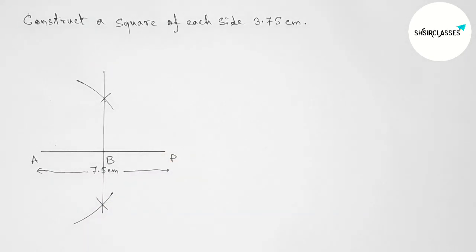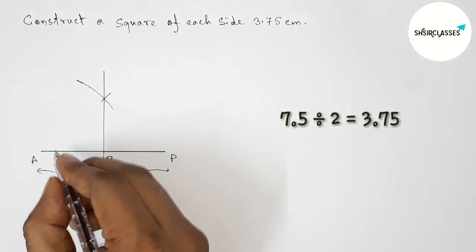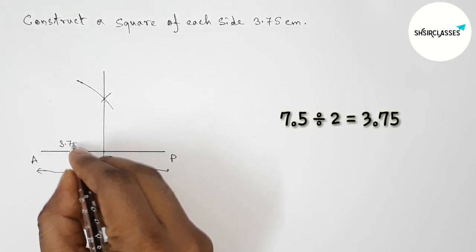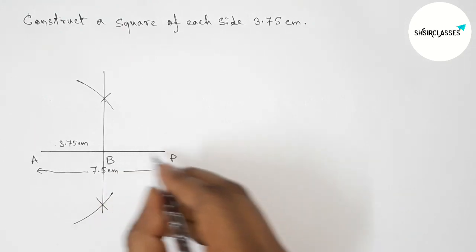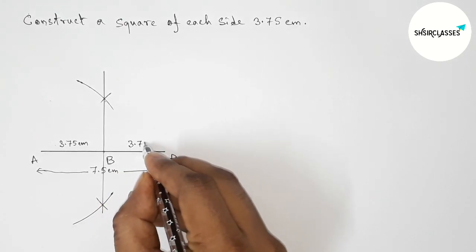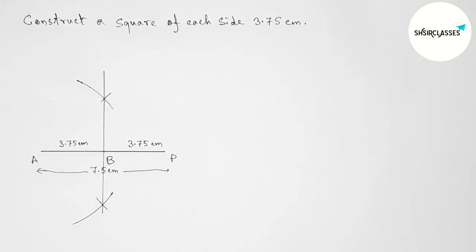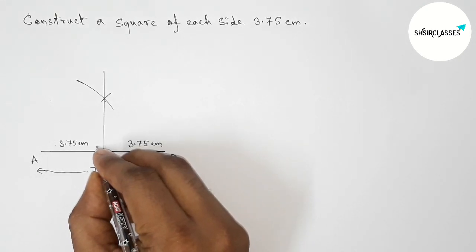Now taking point here B, so AB that is 3.75 centimeter and BP also 3.75 centimeter, and here this is obviously 90 degree angle.